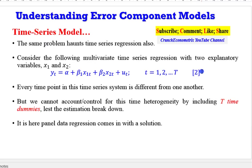How about a time series model? Equation 2 is an example of a time series model given the subscript t. The same problem haunts a time series model. In this example, I have a multivariate time series regression with two explanatory variables, such that every time point in the system is different from one another. And if we are to capture the time heterogeneity in this model, we will need to include t time dummies, which will also make the estimation break down. So this is where panel data comes in with a solution.